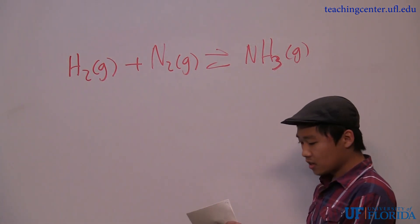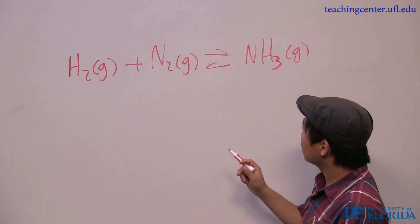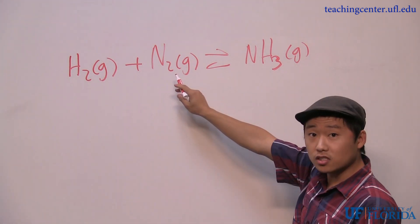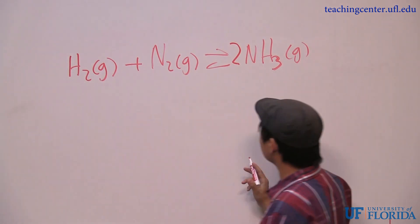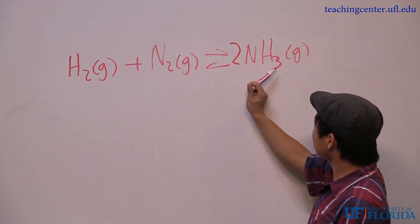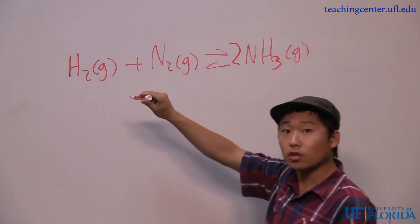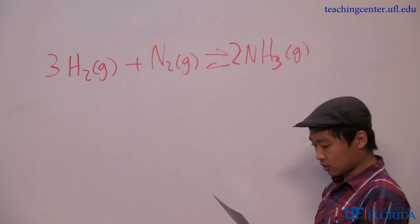Next, we need to balance it. We have two nitrogens on this side and one nitrogen on this side, so let's add that. We have six hydrogens on this side, so we need to put a three here. This is my balanced equation.